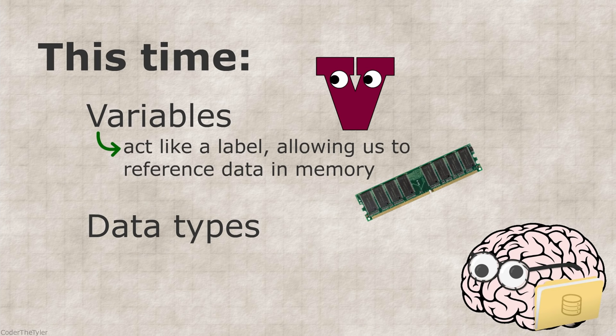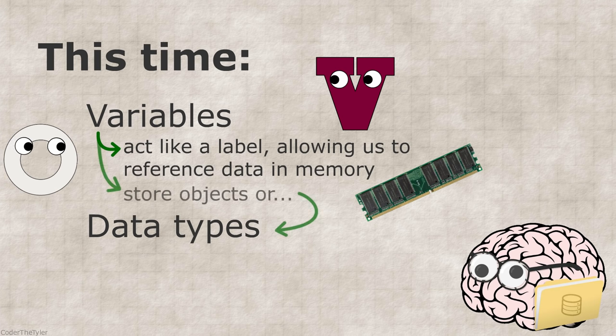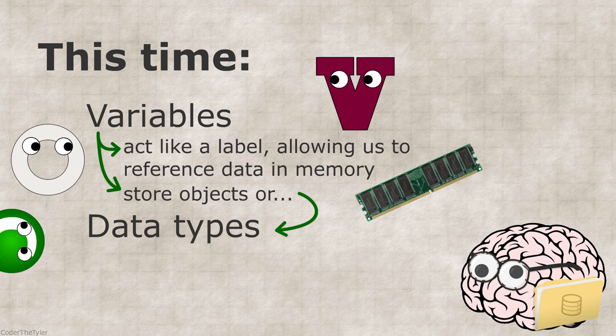We also learned that variables can store two primary types of data, objects and data types. Objects are just instances of a class, each having their own internal variables and methods.